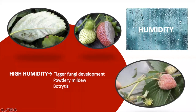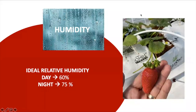On the other hand, high humidity levels can trigger fungi development and some very fastidious pests like powdery mildew and botrytis. Here you can see how this disease can be spotted on your plant, leaves and fruits. In order to avoid all these problems, it's recommendable to maintain a relative humidity of 60 percent during the day and 75 percent during nighttime.